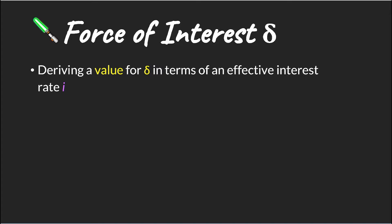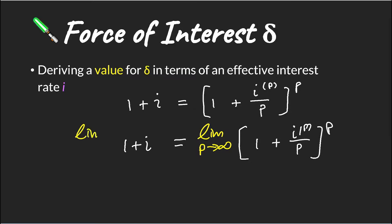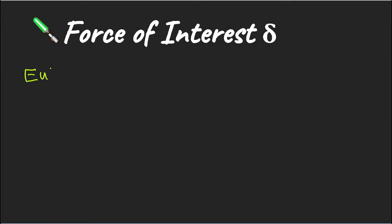So to derive the force of interest in terms of something that we know, like our effective interest rate, we start off with this formula that shows our nominal interest rate in terms of our effective interest rate. We then want to take the limit as P tends to infinity of both sides. And what we'll see is that since there is no P on our left-hand side, we can really just scratch that out. Now, at this point, we want to make use of Euler's rule, which is as follows.